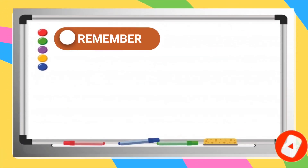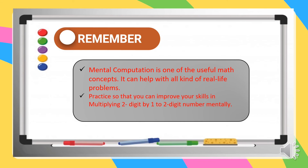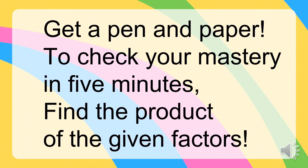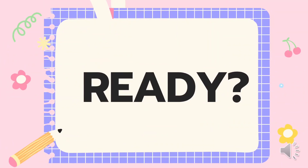Always remember that mental computation is one of the useful math concepts. It can help you with all kinds of real-life problems. Practice so that you can improve your skills in multiplying 2-digit by 1 to 2-digit numbers mentally. Use a pen and paper to check your mastery in 5 items to find the product of the given factors. Are you ready? Let's do it!